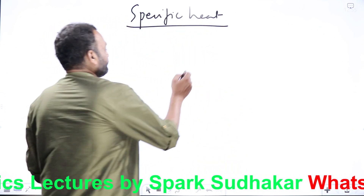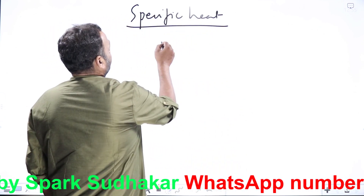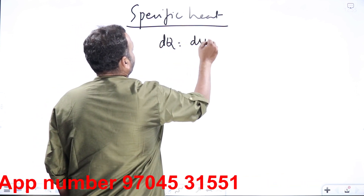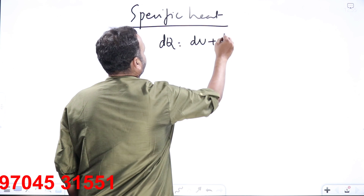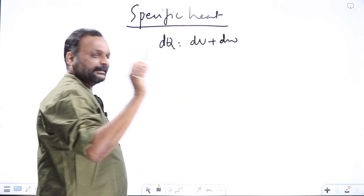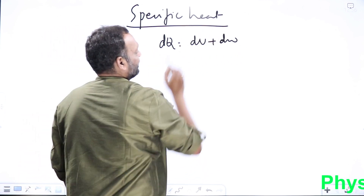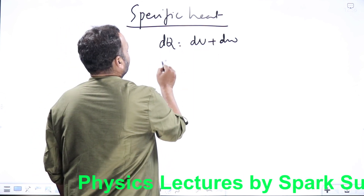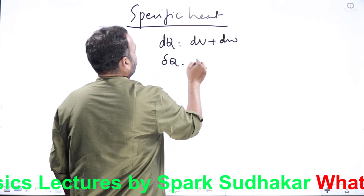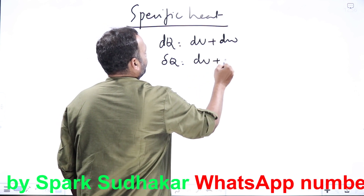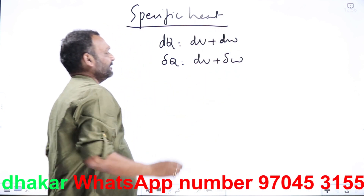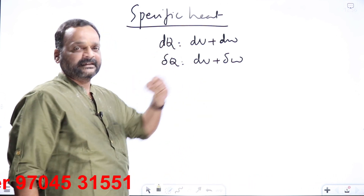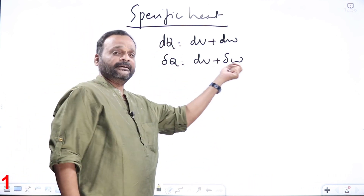We have already seen the first law of thermodynamics, where any amount of heat given dQ is partly used in increasing internal energy and the remaining part is used in doing external work. Heat and work are path functions, so the appropriate notation is delta Q equal to dU plus delta W, though we will write them as dQ and dW.